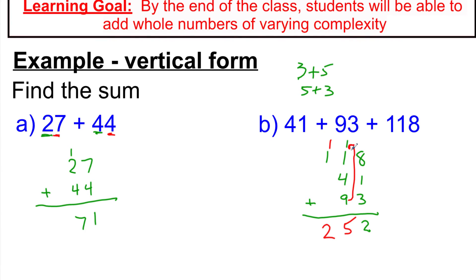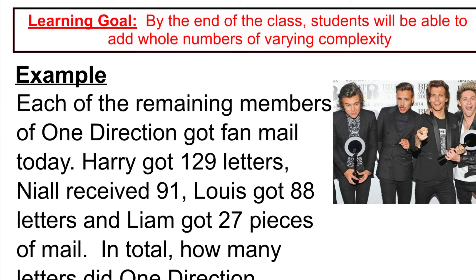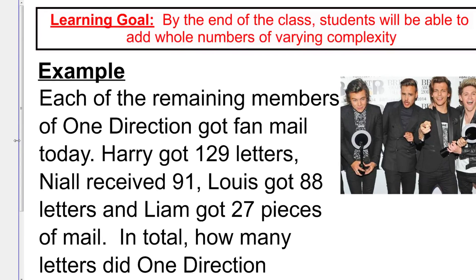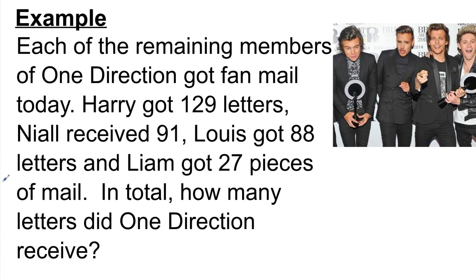Grouping your addition in a different order can be more helpful — giving yourself simple numbers like 10s and 5s instead of going strictly in order. That's just a little tip when adding digits. Now here's our last problem — a word problem. Each of the remaining members of One Direction got fan mail today. Harry got 129. The question asks: in total, how many letters did One Direction receive? The keyword 'total,' like 'sum,' tells us we need to add those values up.